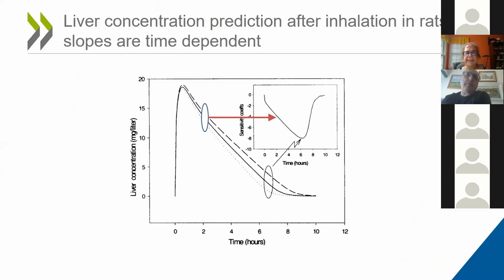Sensitivity analysis is a technique that allows us to quantify the change in model output for a given change in model input. These are simulation results for liver concentration changes after an inhalation exposure. I changed one of the metabolic parameters by 10%, both increase and decrease, and you can see different curves related to those changes. Around two hours, the sensitivity coefficient reflects a change that is smaller than at six hours, reflected by the larger magnitude of the sensitivity coefficient at that point. The sensitivity coefficients are negative, indicating that as we increase this parameter, the liver concentration will decrease.